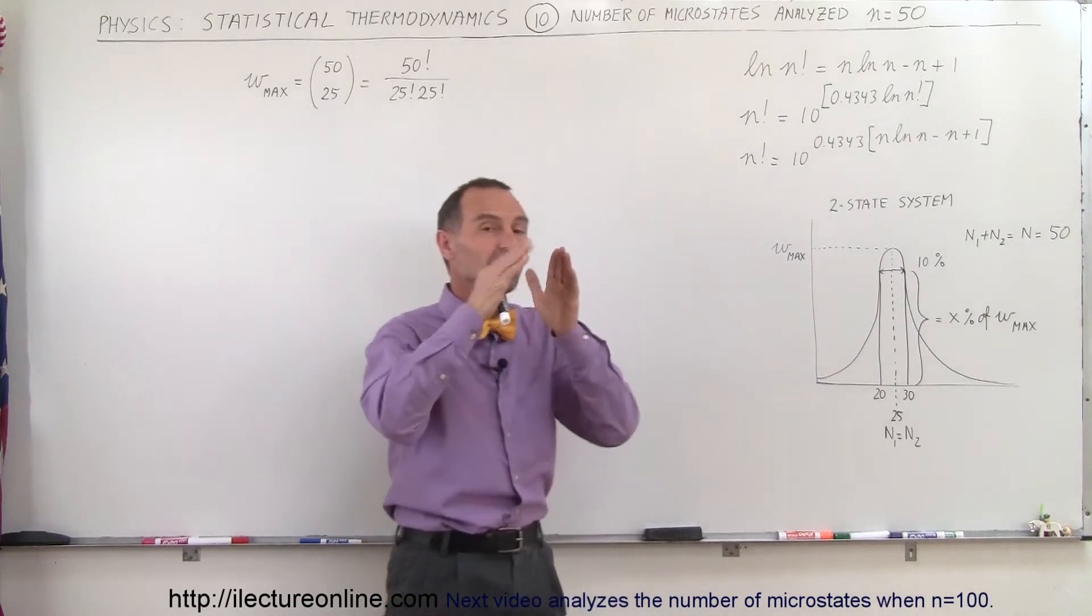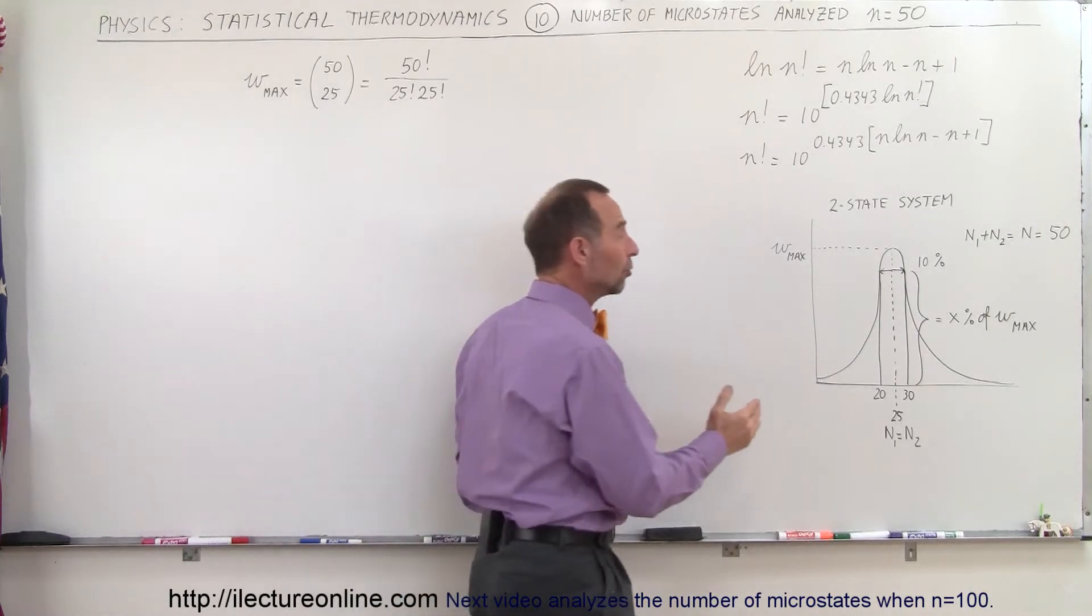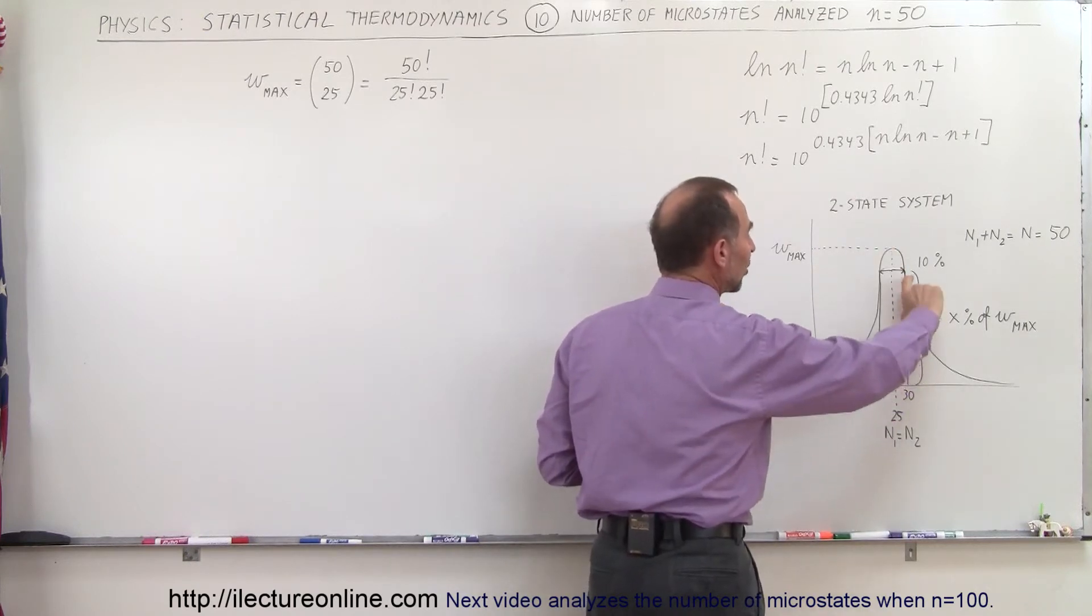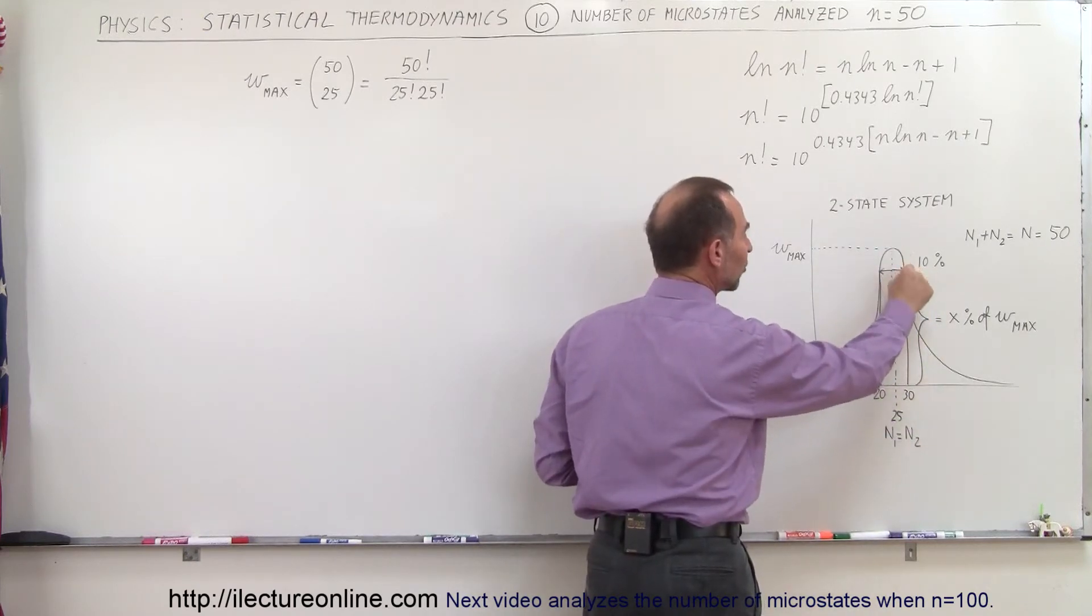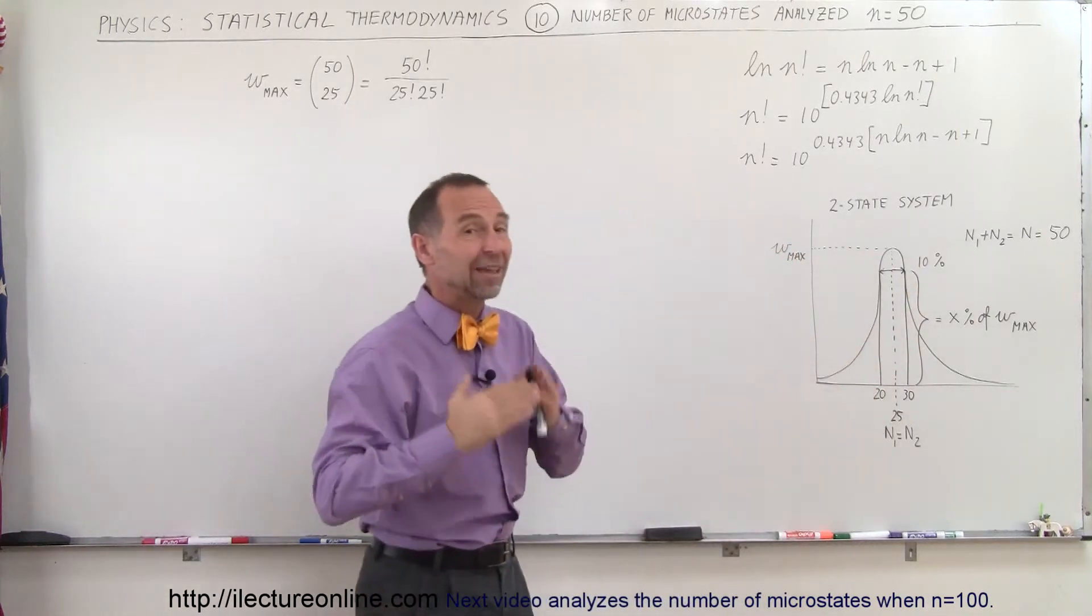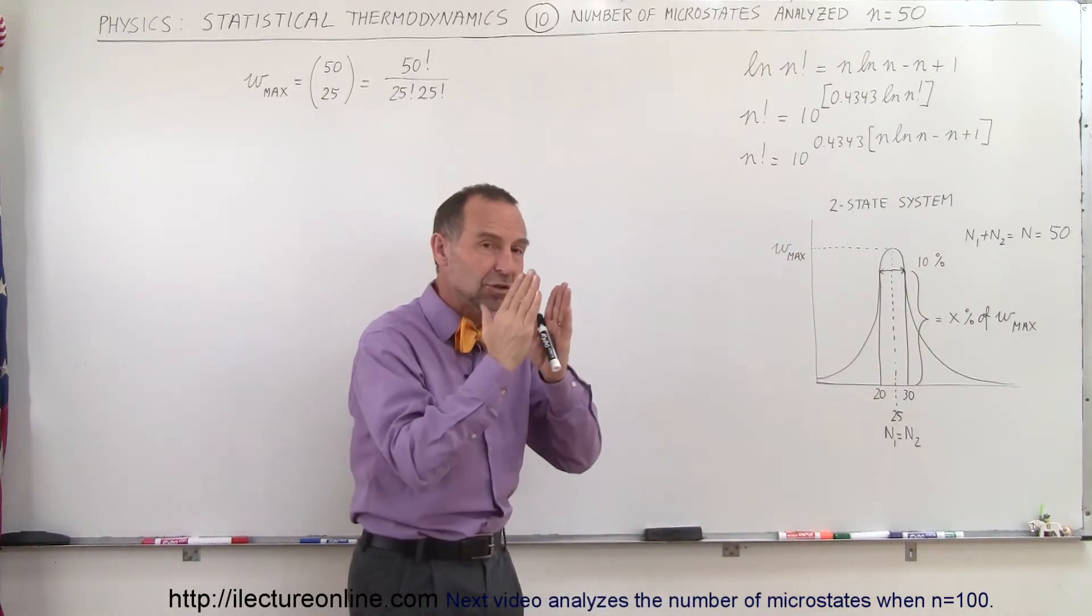We also want to see what the distribution curve looks like. In other words, if we are 10% away from the central maximum, what will be the percentage, what will be the height, the number of microstates in relation to the max number of microstates? And remember, as n becomes bigger, the shape should narrow.